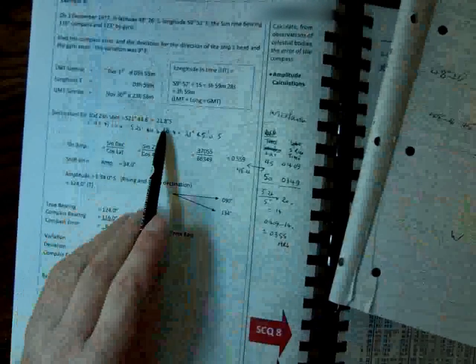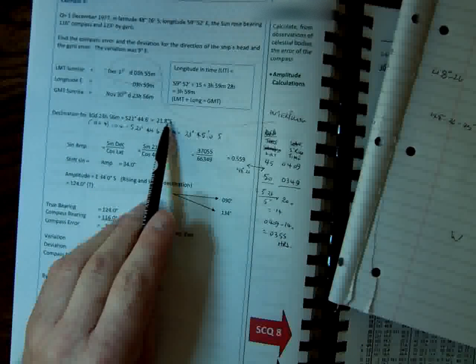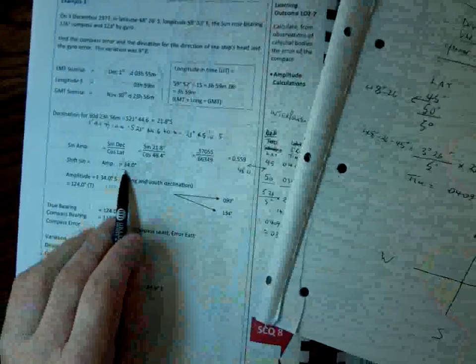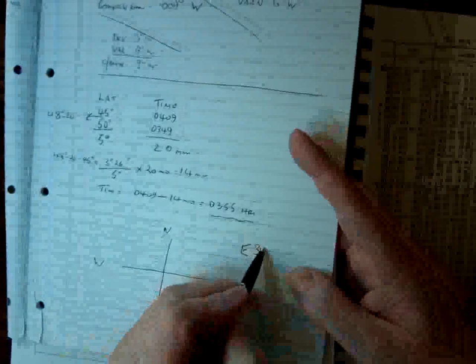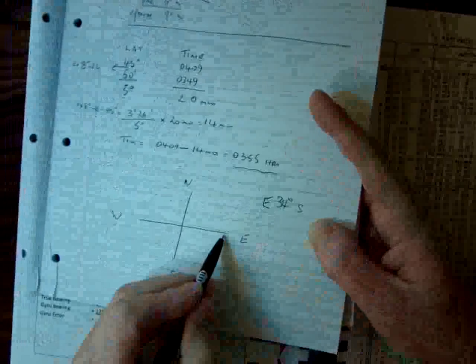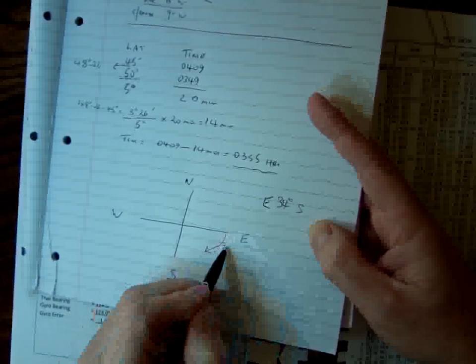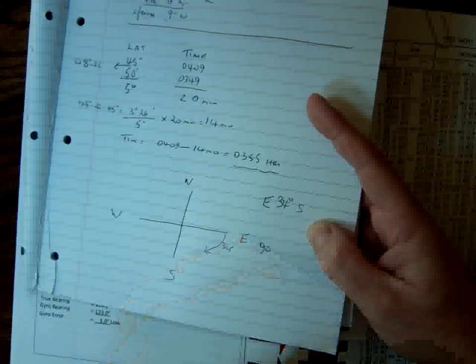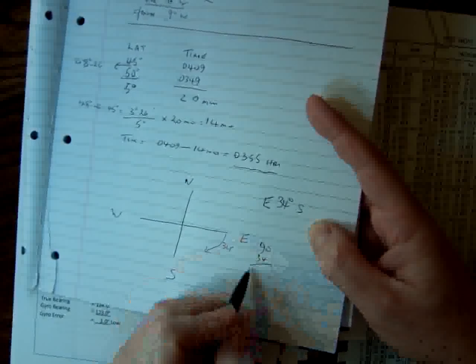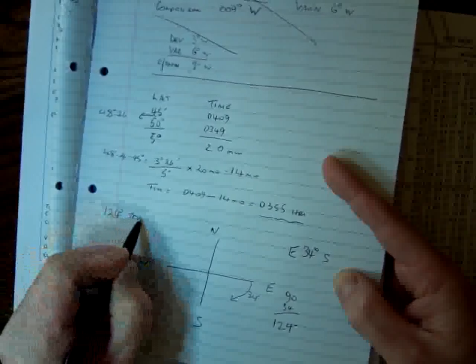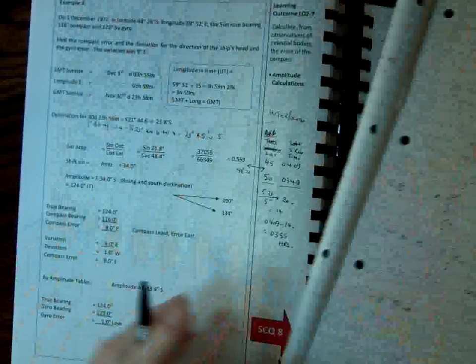Now what do you do with that, with the 34 degrees? We're told that our declination is south, and that the Sun is rising. So the Sun obviously rises in the east, so our value is east 34 degrees south. So what's happening is that it's east towards the south, 34 degrees. So it's going to be 90 degrees, which is east, plus the 34, so it's going to be a true value of 124. So it's 124 degrees true is the bearing of the Sun when it rose.